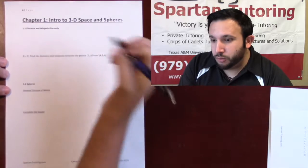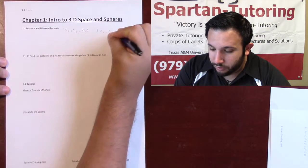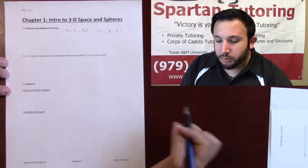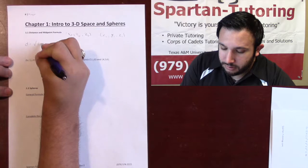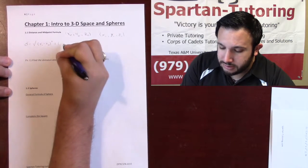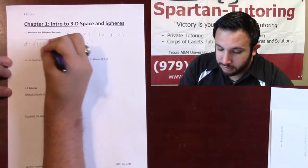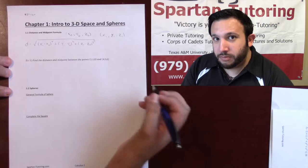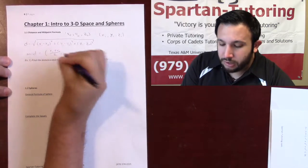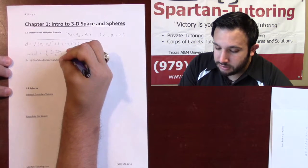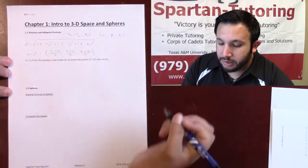Let's say we're given two points — we'll call them x0, y0, z0 and another point x1, y1, z1. Given two random points, I want to find the distance and the midpoint between them. Distance is going to be the square root of (x1 minus x0) squared plus (y1 minus y0) squared plus (z1 minus z0) squared. As for the midpoint, it's going to be (x1 plus x0) over 2, (y1 plus y0) over 2, and (z1 plus z0) over 2 — you're just finding the middle between the x's, the y's, and the z's.